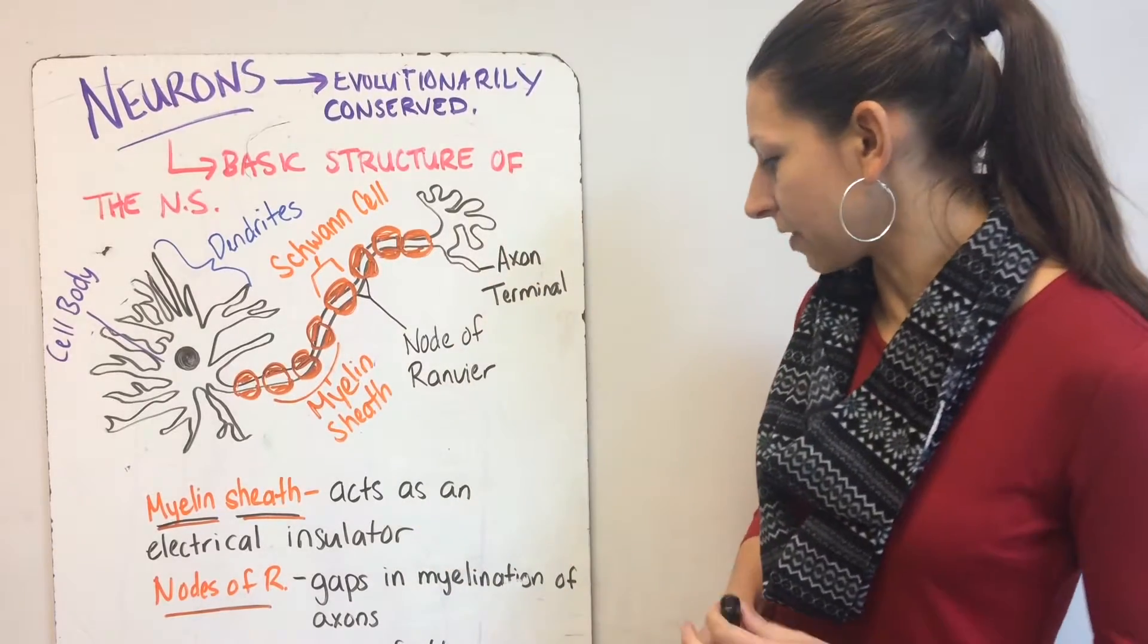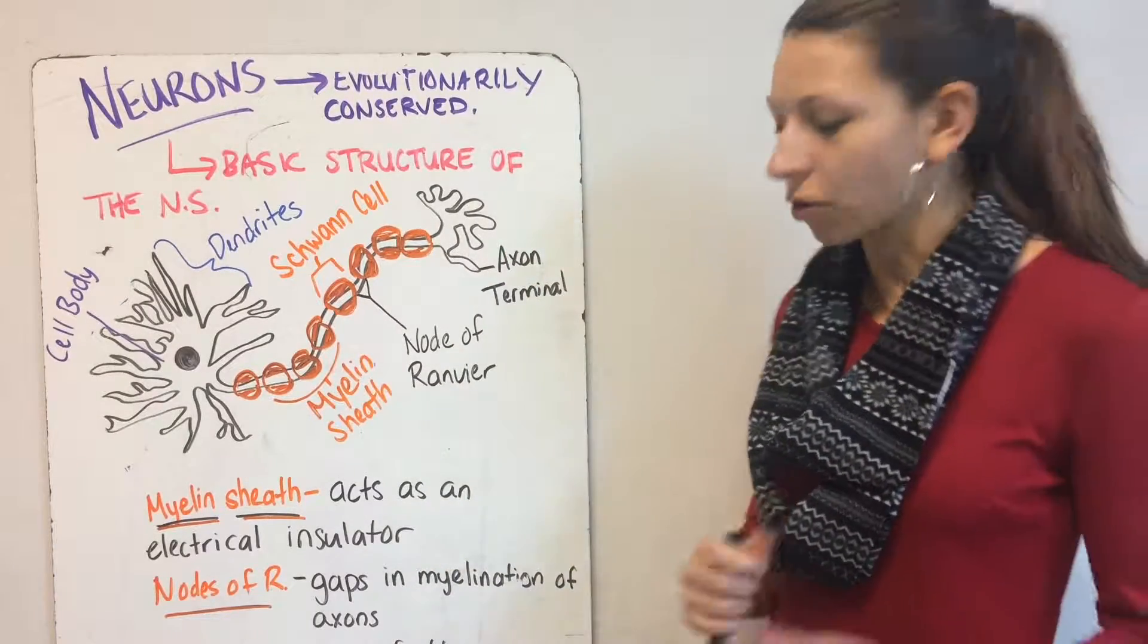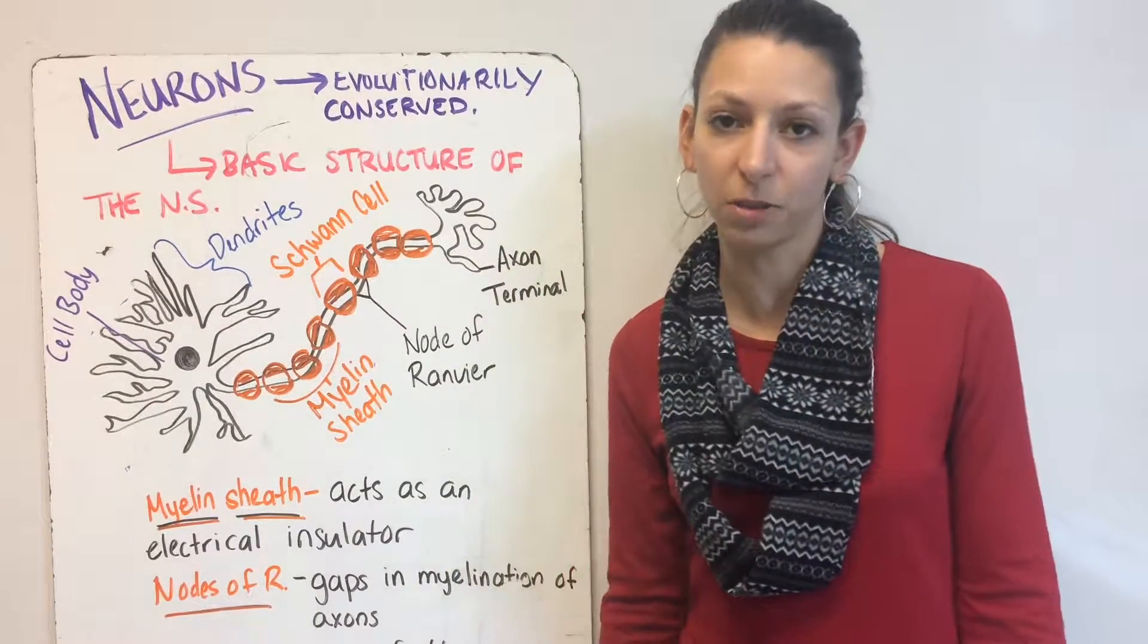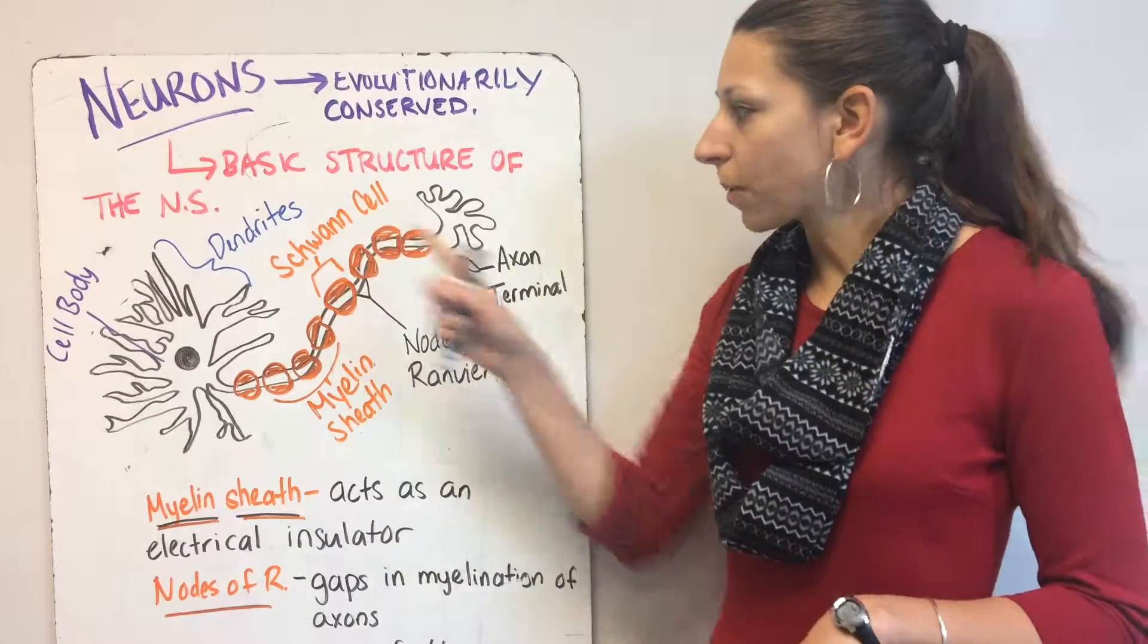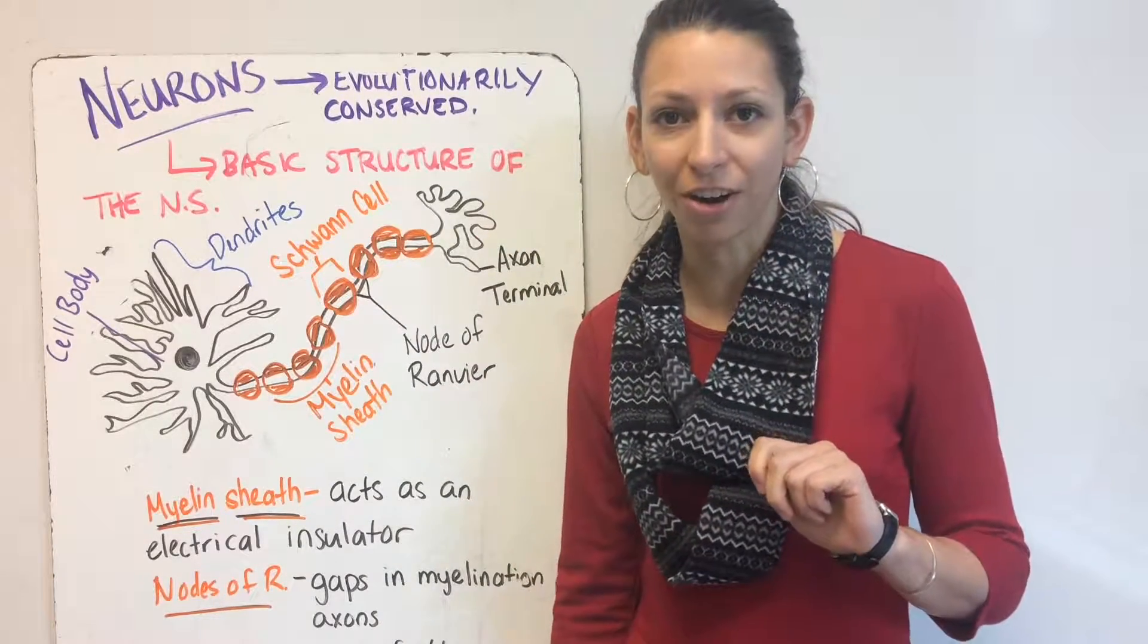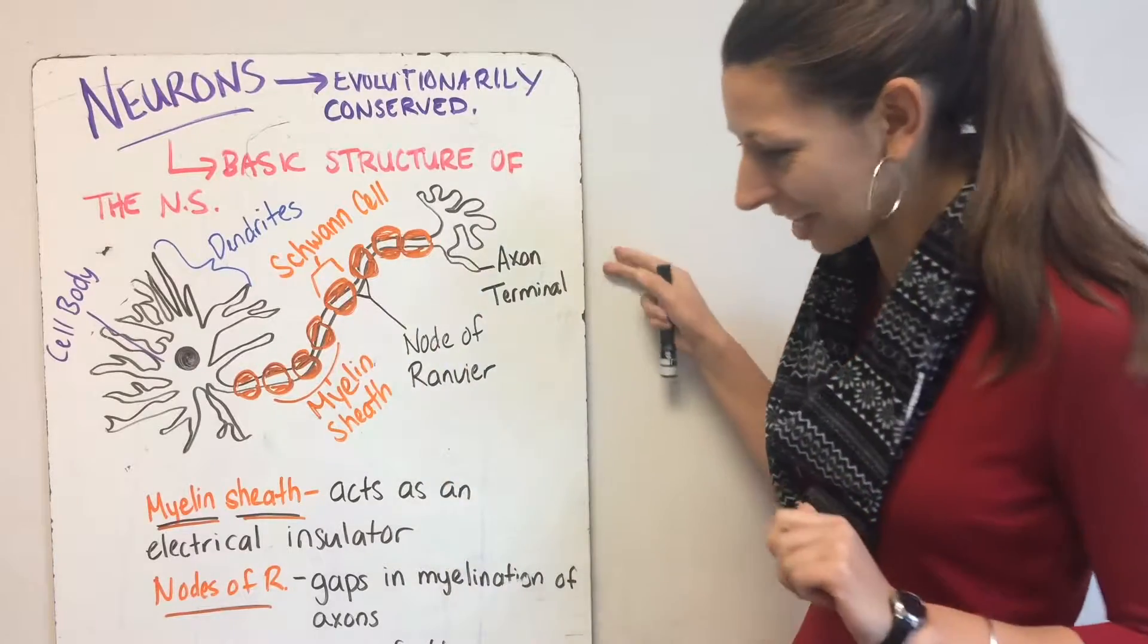Our synaptic terminal is the end of the axon containing the vesicles with our neurotransmitters, and we'll talk about what neurotransmitters are in just a moment.